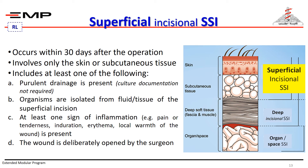Superficial surgical site infection occurs within 30 days after the operation, involves only the skin or subcutaneous tissue, and includes at least one of the following: purulent discharge or drainage is present — cultured documentation is not required; organisms isolated from the fluid or tissue of the superficial incision; at least one sign of inflammation such as pain or tenderness, induration, erythema, or local warmth of the wound; or the wound is deliberately opened by the surgeon for suspicion or management of surgical site infection.